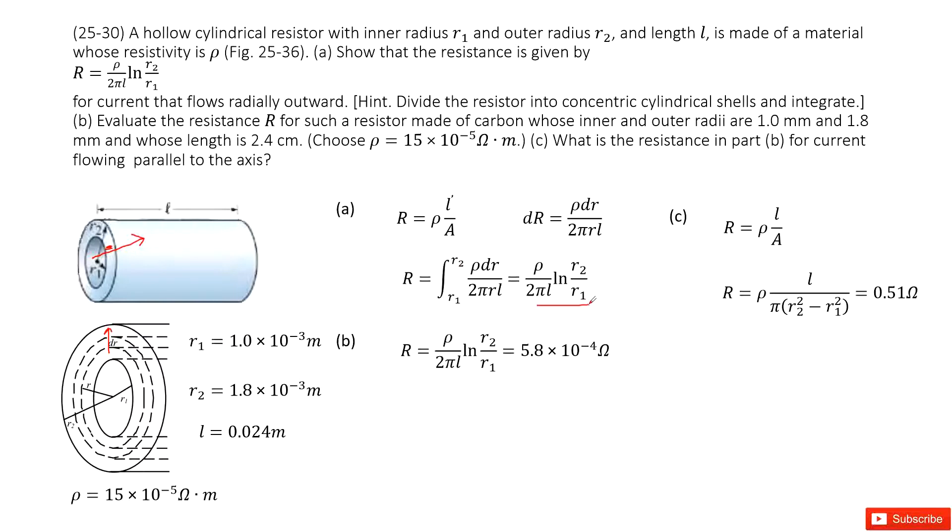Now you can see some quantities are given: R1 is 1 mm, R2 is 1.8 mm, length L is given, and the resistivity is given. So we input all these quantities into this function R and we can get the final answer.